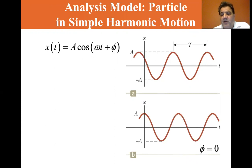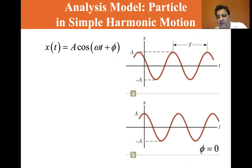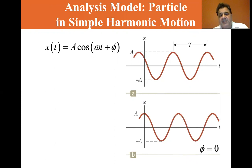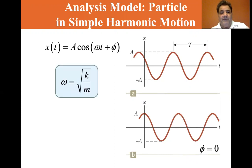If there's no phase shift — if phi equals zero — then as you can see in the lower picture, it is indeed a cosine function.